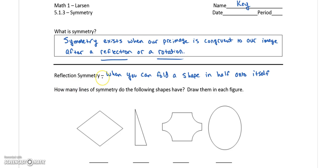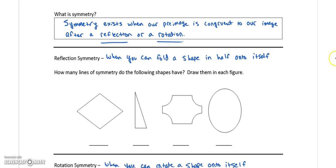So reflection symmetry, that's the one that we think of all the time. That's when you can fold a shape onto itself. So if you fold it in half and it lies exactly on itself. Down here, how many lines of symmetry do the following shapes have? Let's go ahead and draw them in. So I could fold this diamond type shape in two different spots and it would fold over on itself.